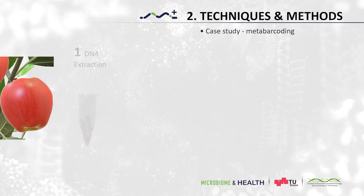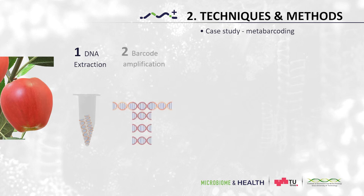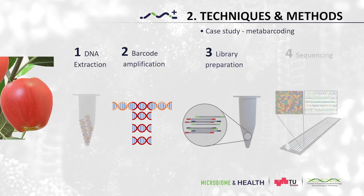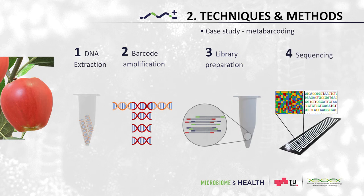Remember, metabarcoding starts by extracting the DNA from a sample. Then barcode genes are amplified and sequenced in order to identify the microbial community. In order to get the DNA out of the microbial cells, we need to break them. This is usually done by mechanical and enzymatic lysis.